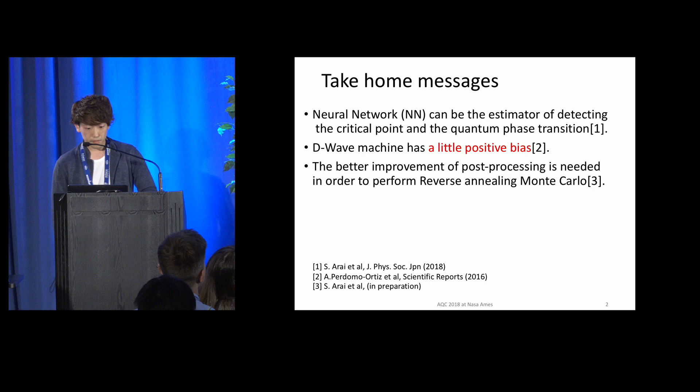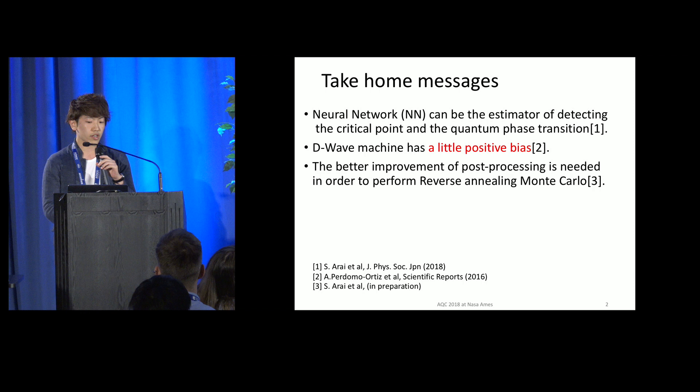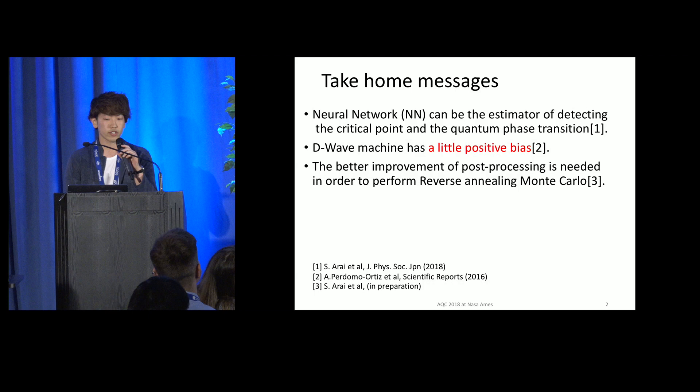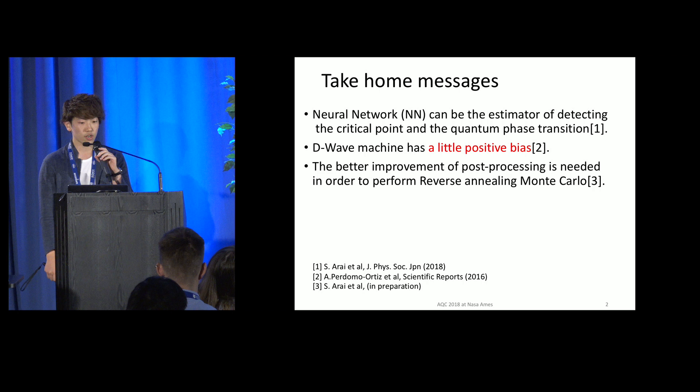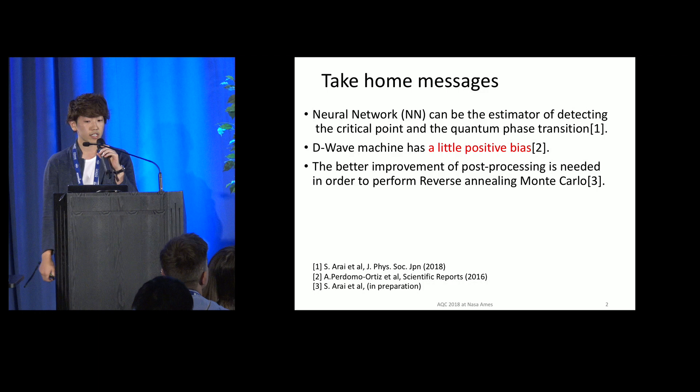In this presentation, we treat a one-dimensional transverse field Ising model which has ferromagnetic interactions. Neural network can detect the indication of the phase transition from the finite-size system at finite temperature. This is a machine learning approach to detect the quantum phase transition. And the second take-home message is: the D-Wave machine has a little positive bias.